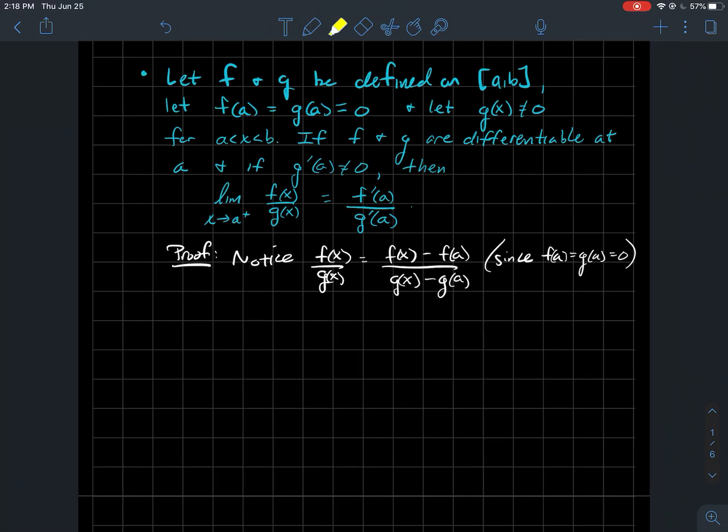So again, I can rewrite this fraction. I'm just subtracting zero in the top and bottom, so nothing's different. And then what I'm going to do is I'm going to divide the numerator by x minus a, and I'm also going to divide the denominator by x minus a, so that this stuff is the same as this stuff. I've just divided the numerator and denominator by x minus a.